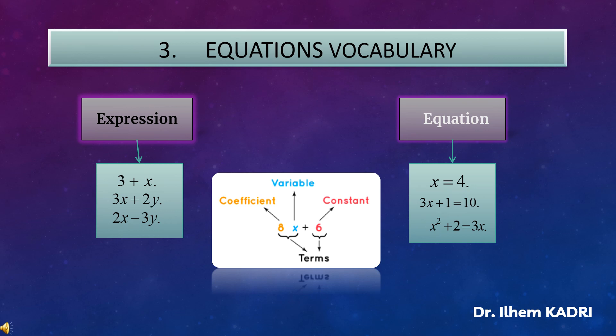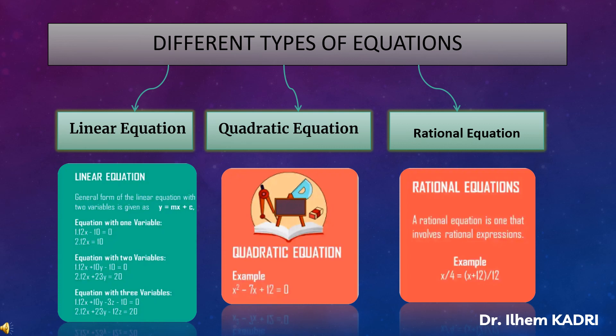Now we move to the equations vocabulary. We have expressions and equations. An expression is a combination of constants, variables, and terms, while an equation is a mathematical sentence that shows two quantities are equal. For the different types of equations, we have linear equations, quadratic equations, and rational equations. A linear equation has the highest power of the variable equal to 1, also known as a first-degree equation. A quadratic equation is the second-degree equation, with general form ax² + bx + c = 0. A rational equation is one that involves a rational expression.